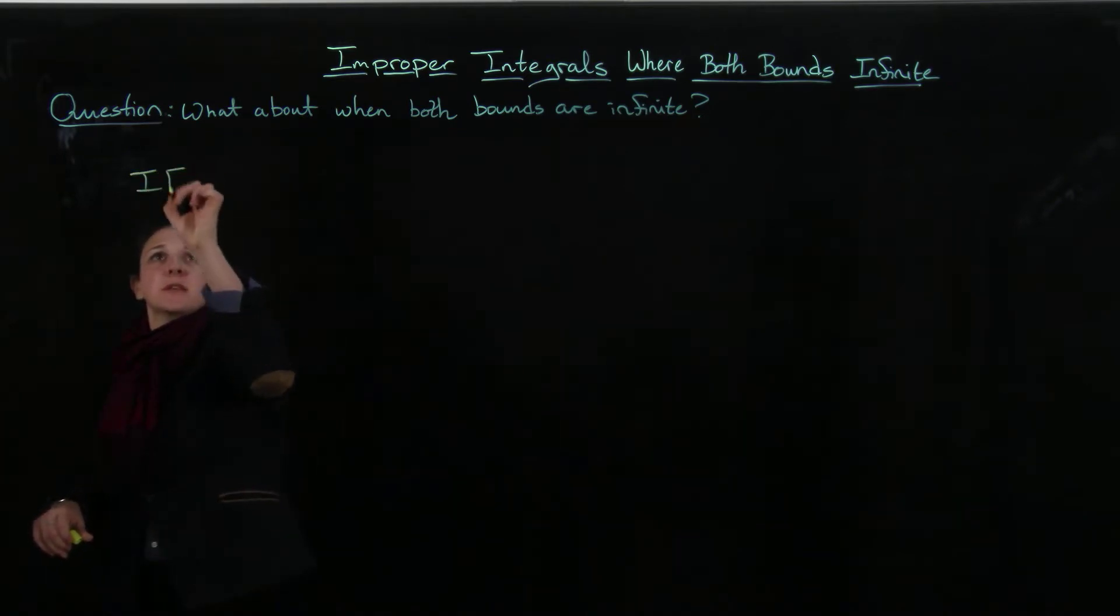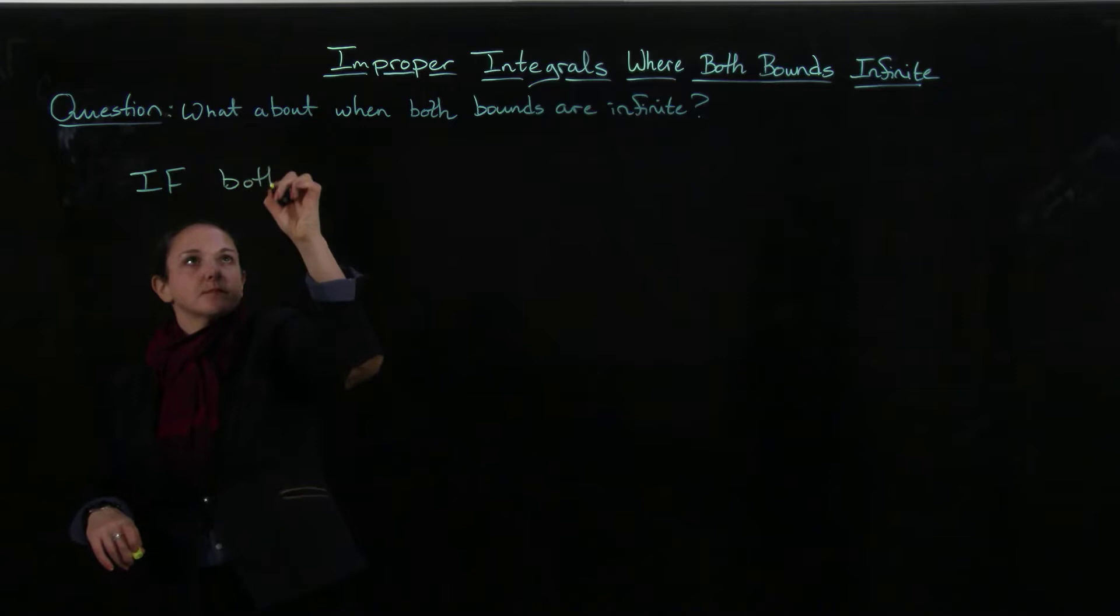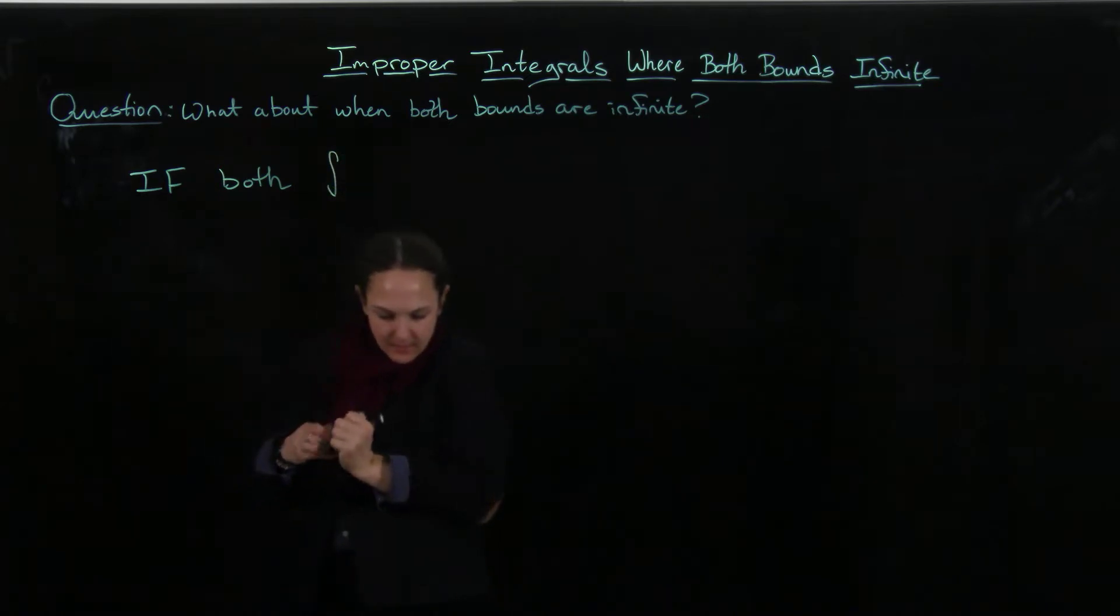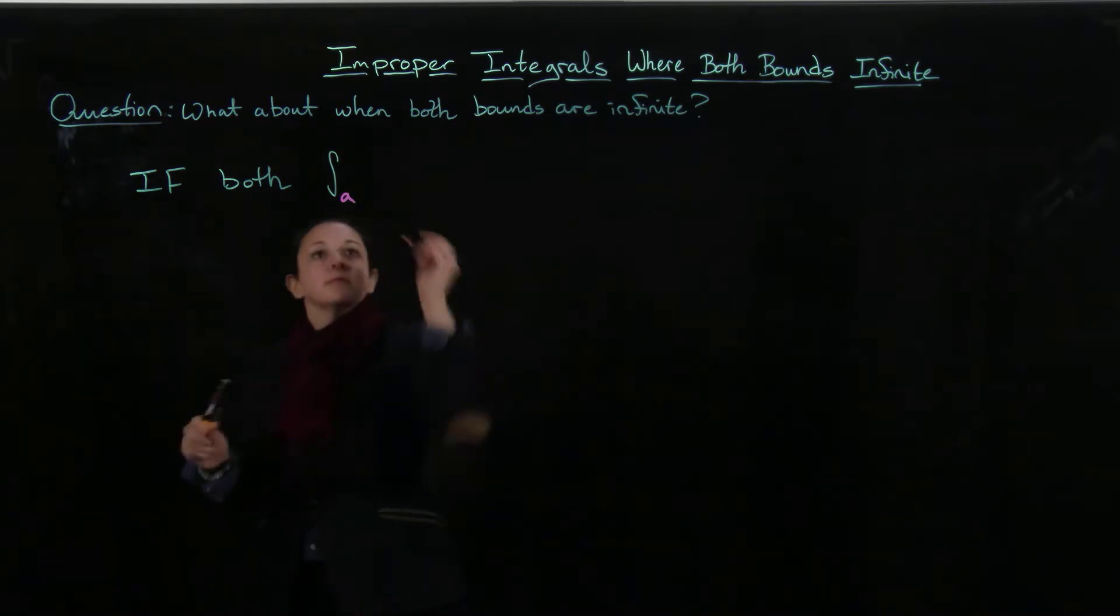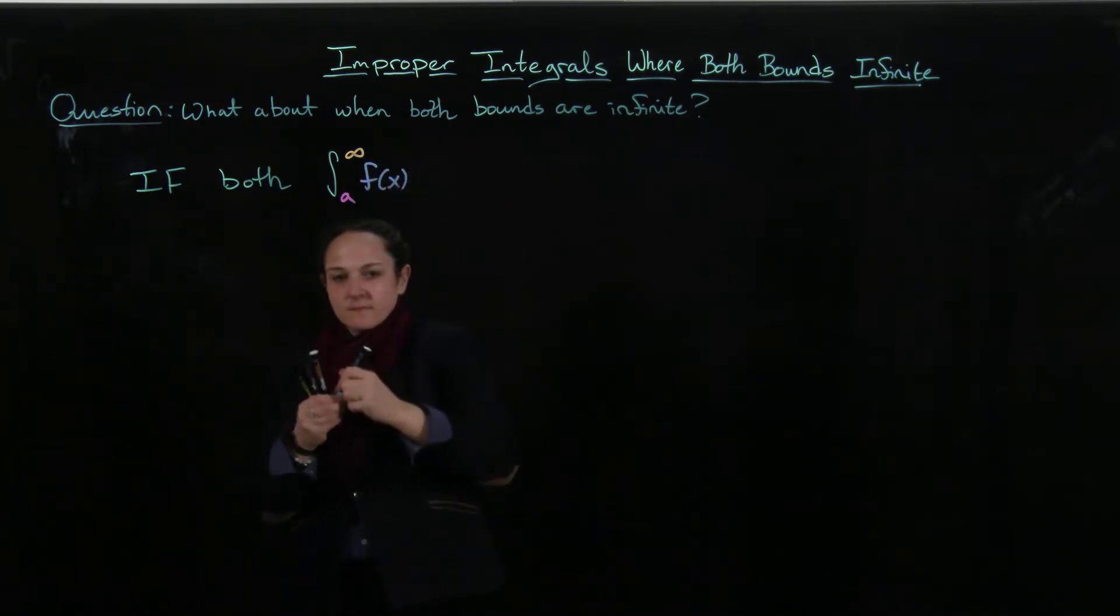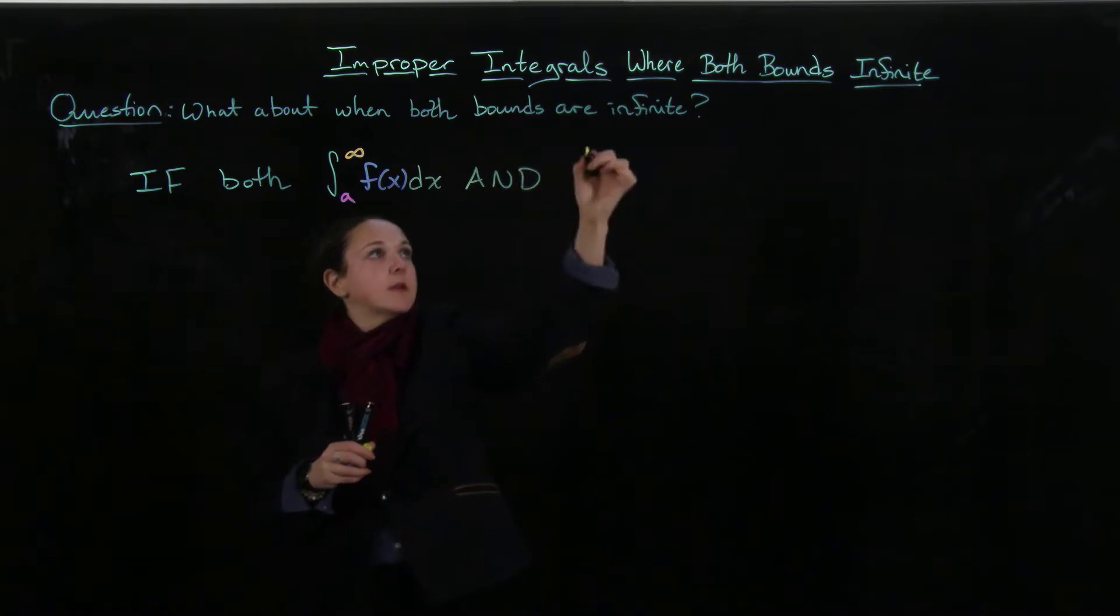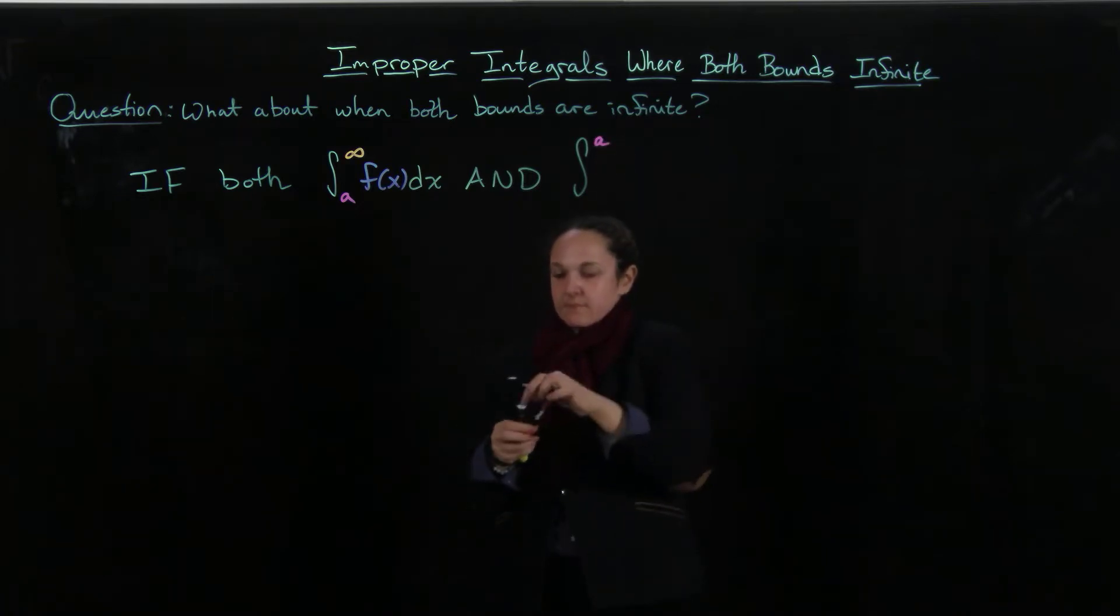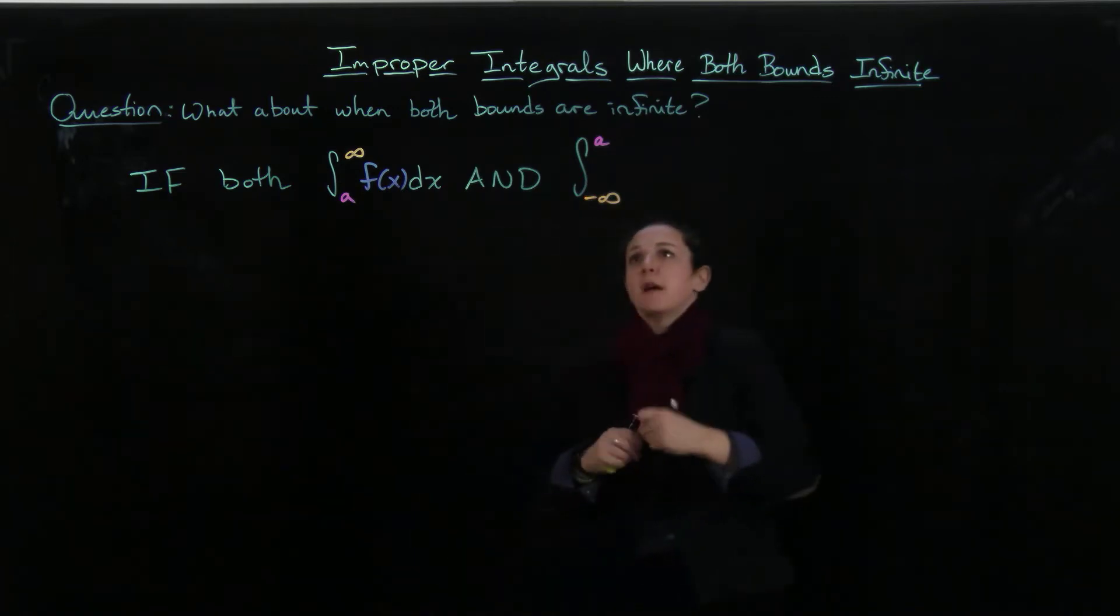So that's kind of the question: what about if both bounds are infinite? So if we have that the integral from a to infinity of f(x)dx and we have that the integral from minus infinity to a of f(x)dx...